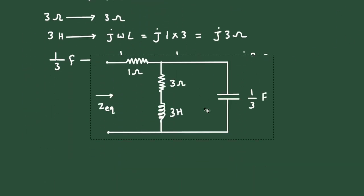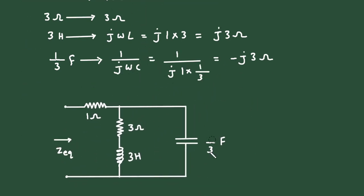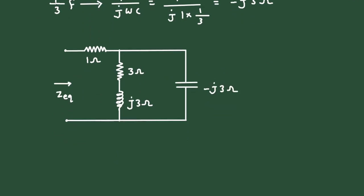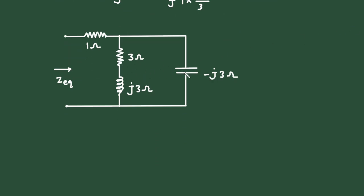Now we will replace all these values with their equivalent phasor domain format. The 1/3 farad changes to minus j3 ohm, the 3 Henry changes to j3 ohm, and the 3 ohm and 1 ohm resistors remain the same. We can see these two elements — 3 plus j3 — are connected in parallel with minus j3 ohm.